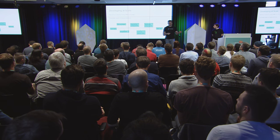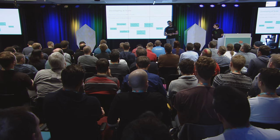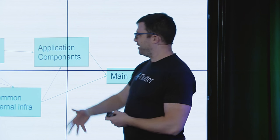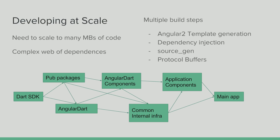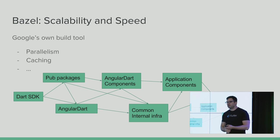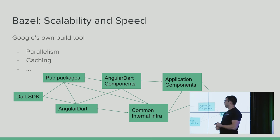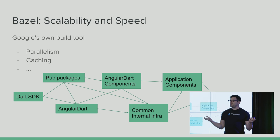So what's the solution here? I actually borrowed some slides from Vijay — he talked about this yesterday in the Dev Compiler talk — which is, we have many megabytes of code, complex dependencies. How do you solve this? The way we do that internally is a system called Bazel. It gives you amazing parallelism and caching, and that's how you do things quickly. Make solved this a long time ago.